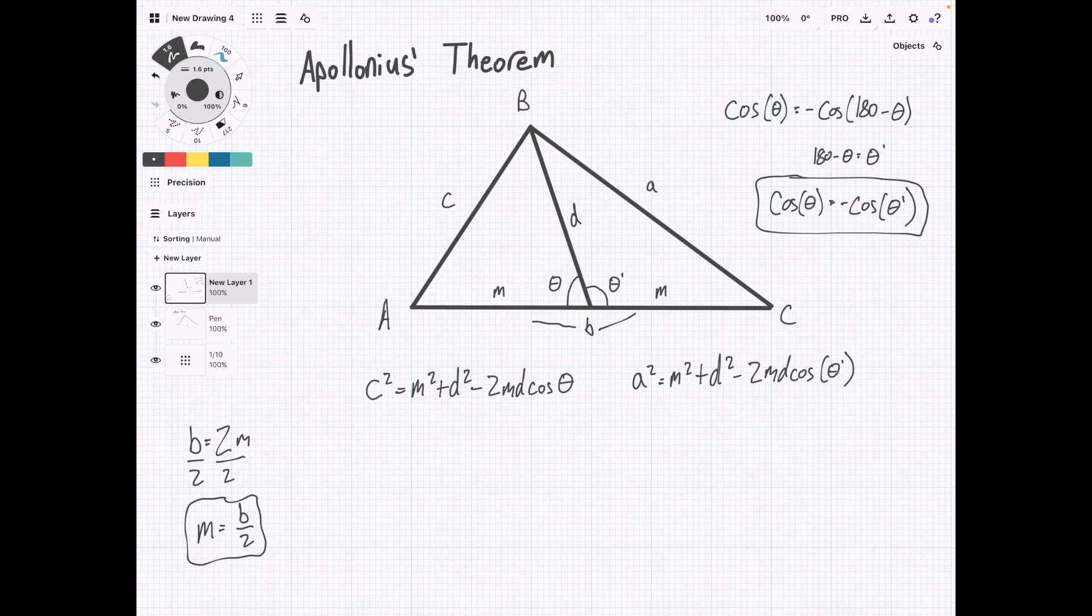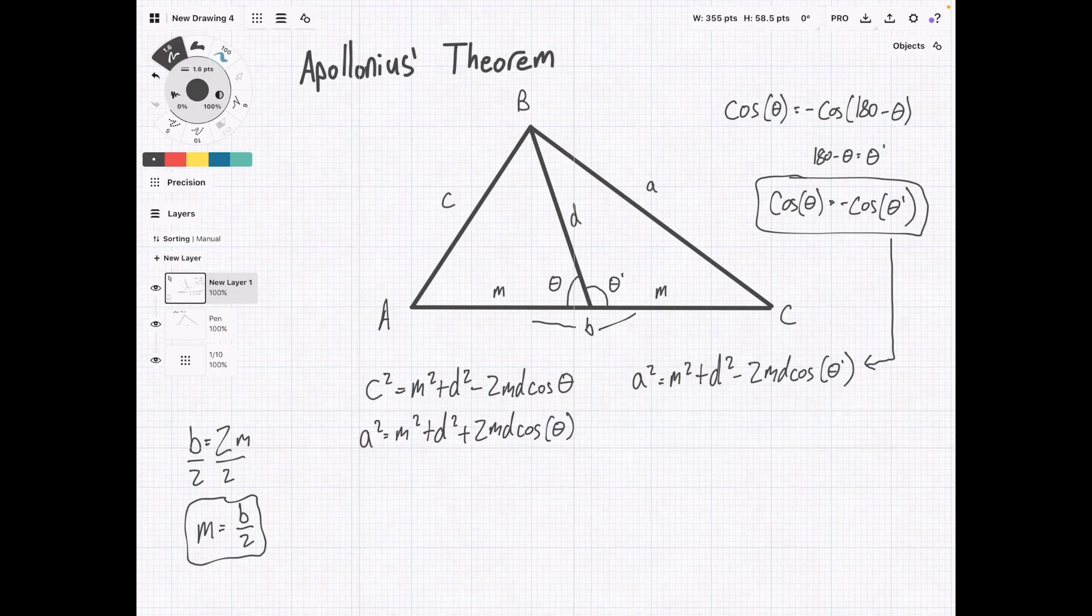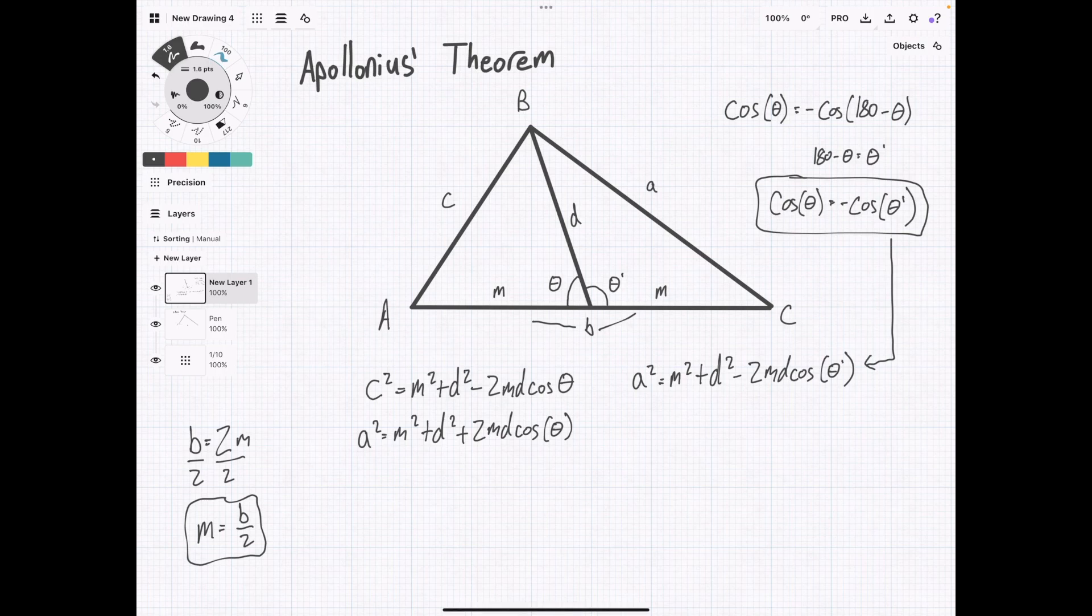Now what we're going to do is take this thing that we just derived up here and replace theta prime, cosine of theta prime here. So now we're going to have a squared equals m squared plus d squared plus 2md cosine of theta. Now we take this equation, move it over here, and we're going to add these together.